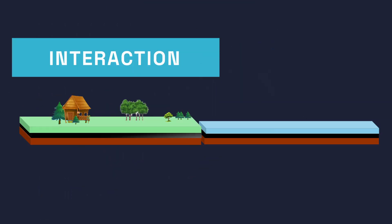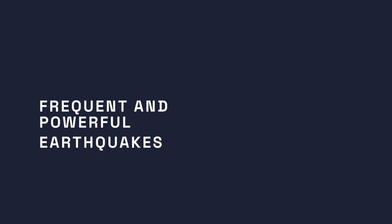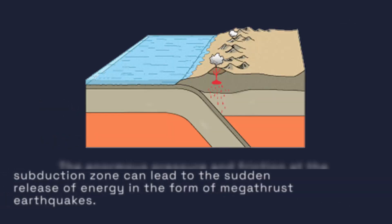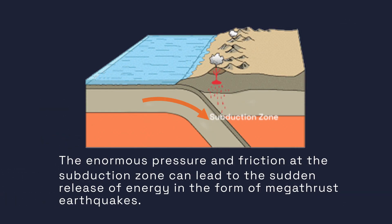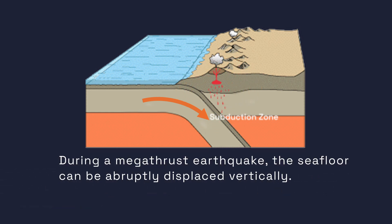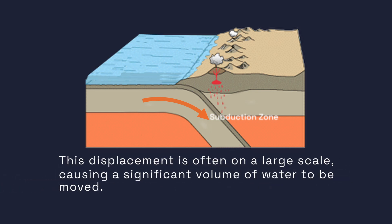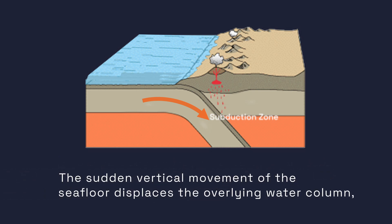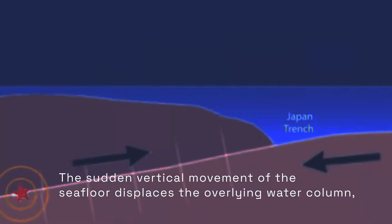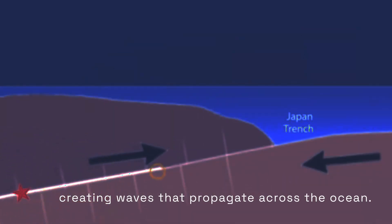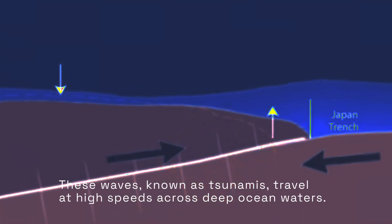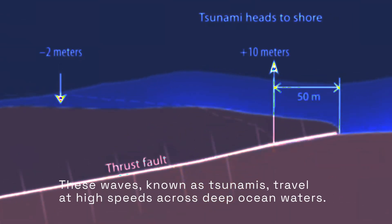The interaction between the colliding plates generates significant seismic activity, leading to frequent and powerful earthquakes. The enormous pressure and friction at the subduction zone can lead to the sudden release of energy in the form of megathrust earthquakes. During a megathrust earthquake, the seafloor can be abruptly displaced vertically on a large scale, causing a significant volume of water to be moved. The sudden vertical movement of the seafloor displaces the overlying water column, creating waves known as tsunamis that travel at high speeds across deep ocean waters.